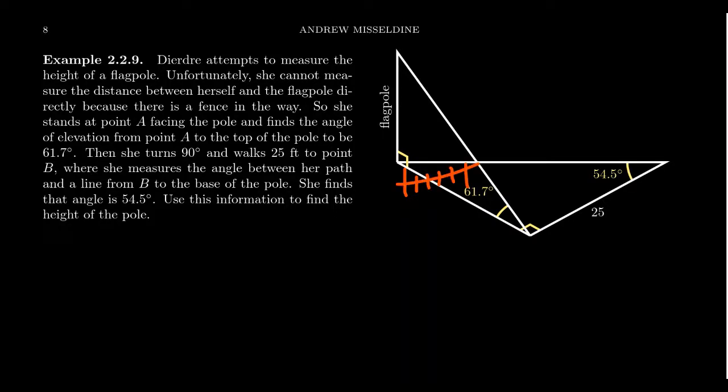So the flagpole might be on private property or a restricted area, so she can't actually get to the flagpole and measure the distance out and then calculate the angle of elevation. Instead, she's going to measure the angle of elevation from some fixed point to the top of the flagpole, and that angle of elevation turns out to be 61.7 degrees.